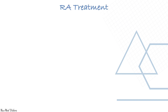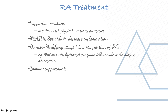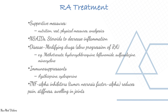Treatment for rheumatoid arthritis includes supportive measures — nutrition, rest, physical measures, analgesics — and anesthetics; steroids to decrease inflammation; disease-modifying anti-rheumatic drugs (DMARDs); and immunosuppressants. TNF-alpha inhibitors reduce pain, stiffness, and swelling in joints — examples include etanercept, infliximab, and adalimumab.